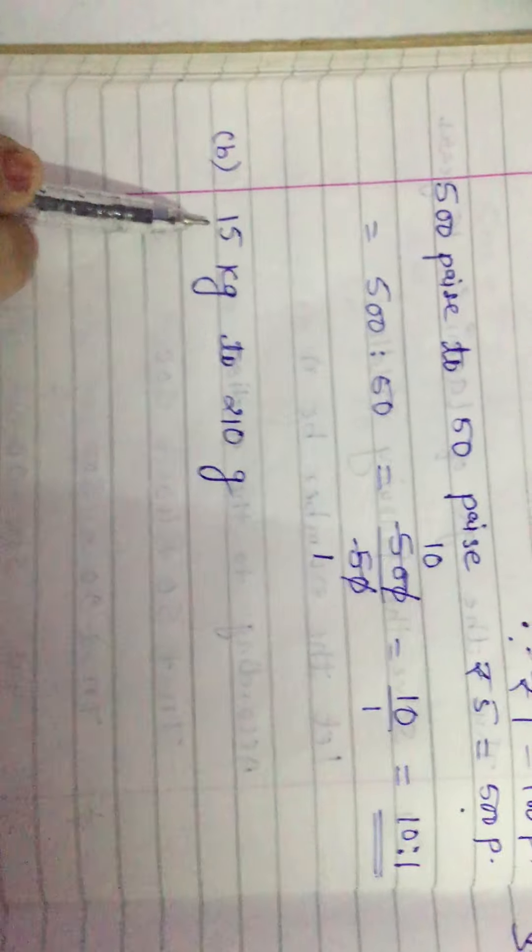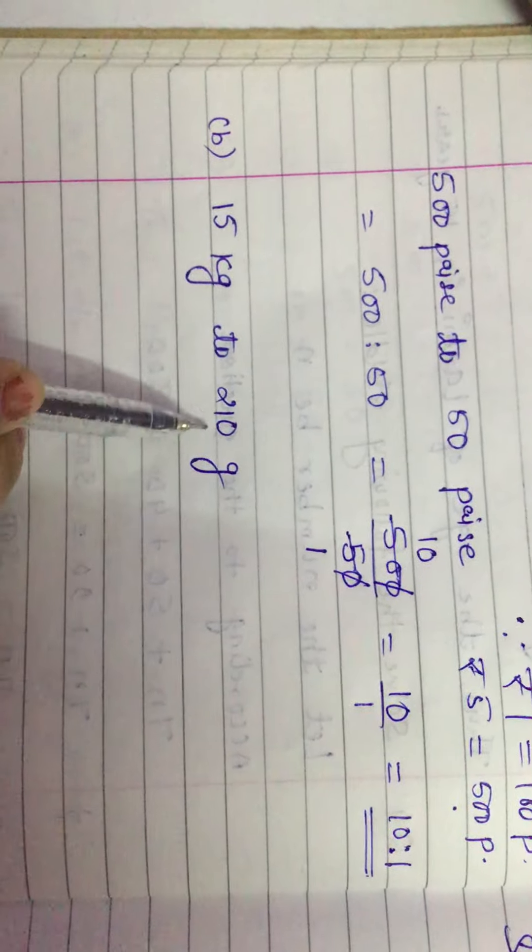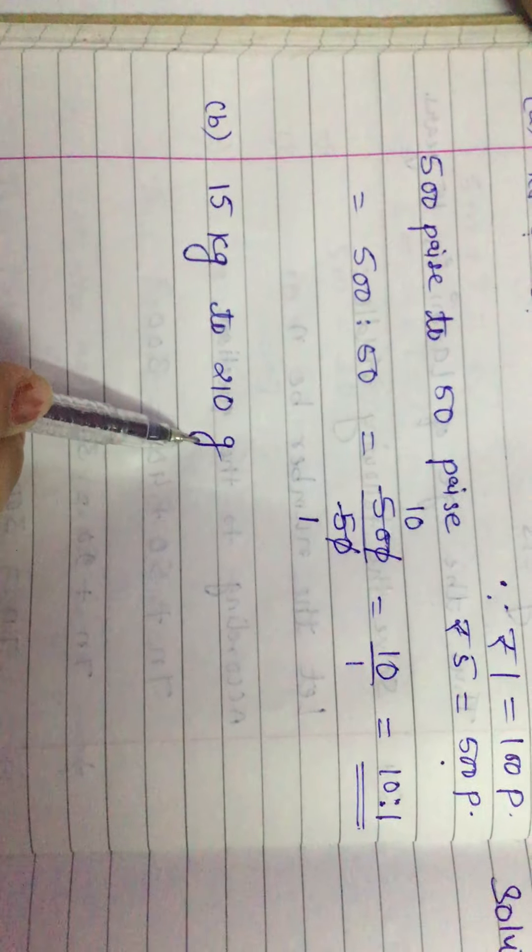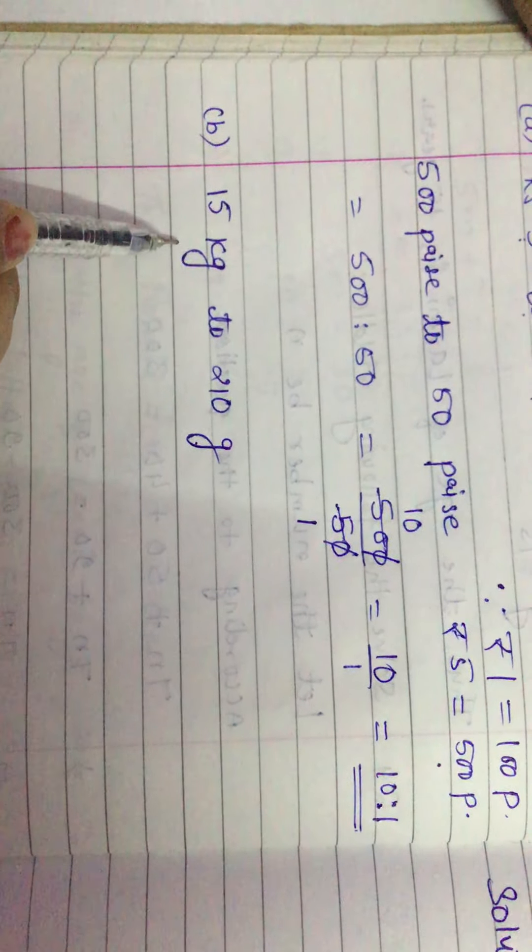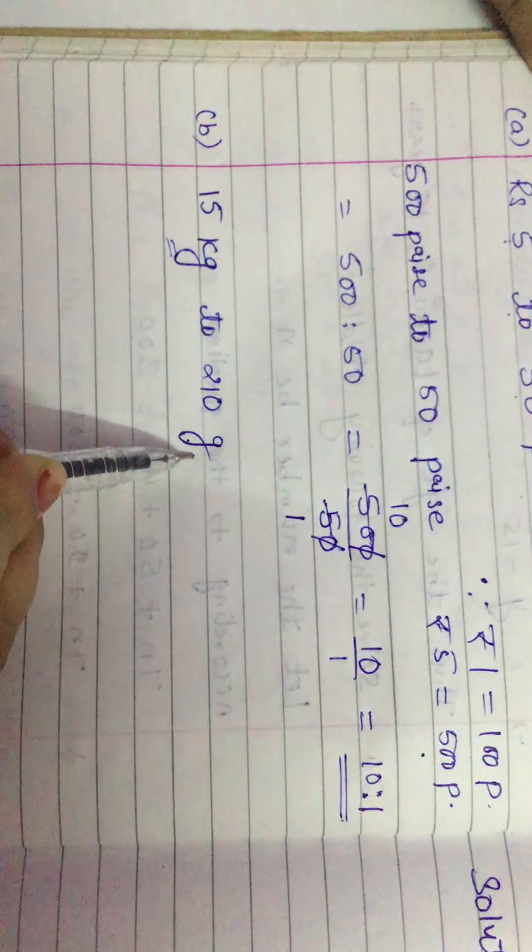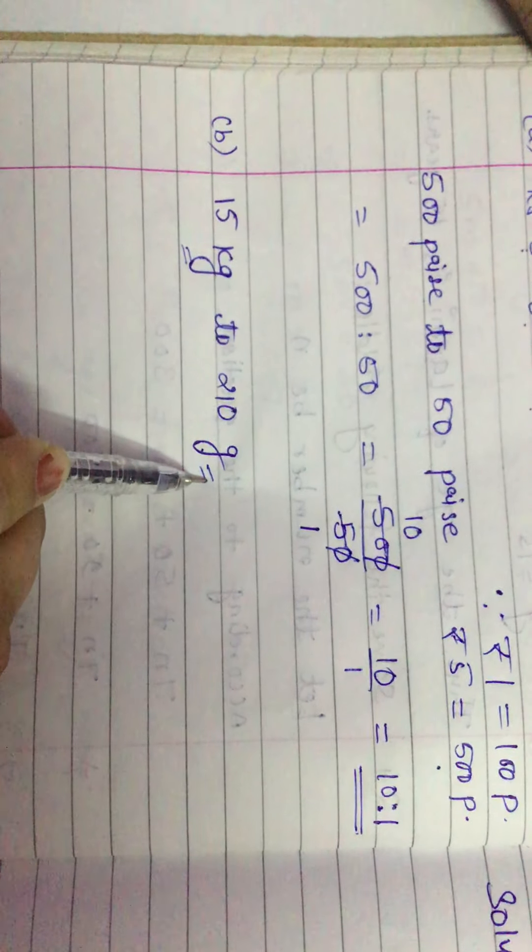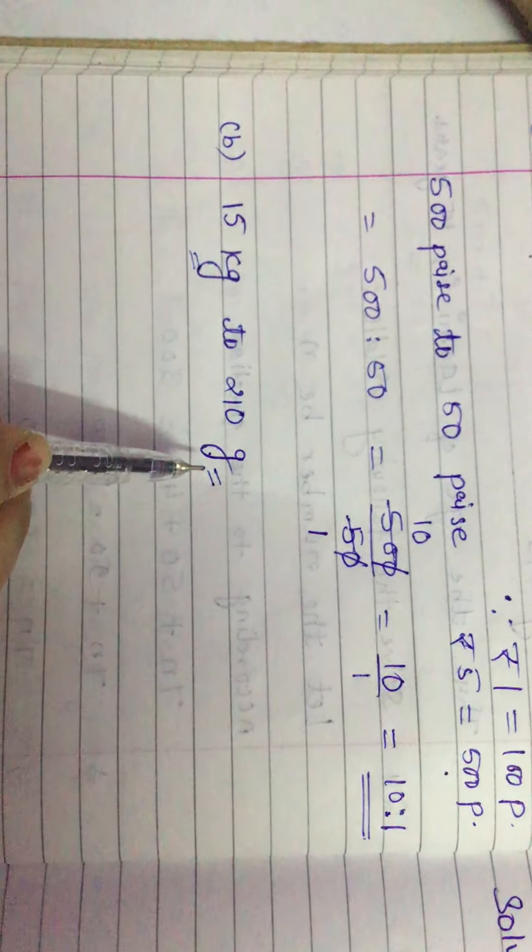Part B: 15 kilogram to 210 gram. Here again we can see that one quantity is in kilogram and the other is gram. So first we have to convert to same unit.